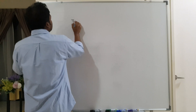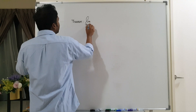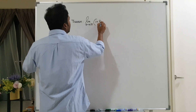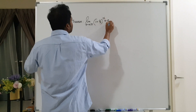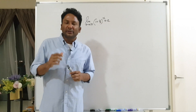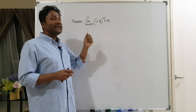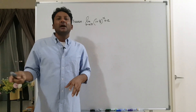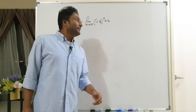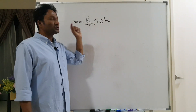Theorem. Theorem. Limit x tends to infinity, 1 plus 1 by x, whole to the power x, is equal to e. When you search the internet, what is e? e is the limiting value of this function as x tends to infinity.